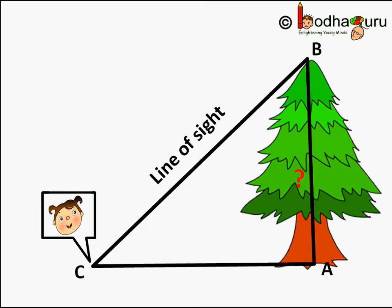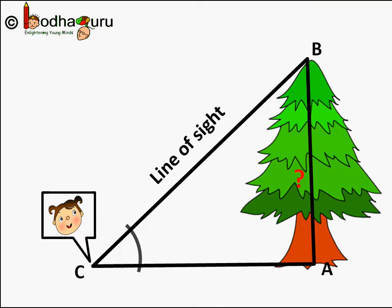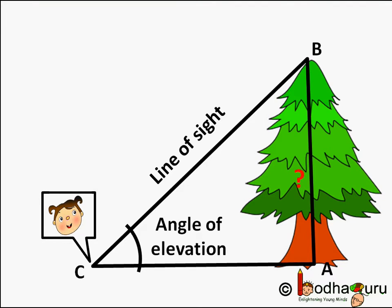The angle your line of sight forms with the horizontal plane, that is ground, that is angle ACB, is called angle of elevation. Because you are looking up towards the top of the tree.